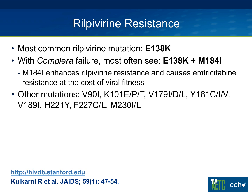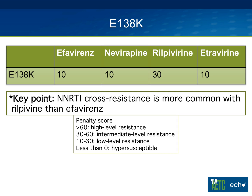Other mutations can occur with rilpivirine failure and accumulate over time. The E138K mutation causes cross-resistance affecting all NNRTIs, though not quite as bad as Y181C. We see intermediate resistance to rilpivirine, low-level resistance to efavirenz, low to nevirapine, and low to etravirine. The key point is that NNRTI cross-resistance is more common with rilpivirine failure than with efavirenz failure. So a disadvantage of Complera versus Atripla is that if the patient fails Complera, NNRTI cross-resistance across the whole class is much more likely.